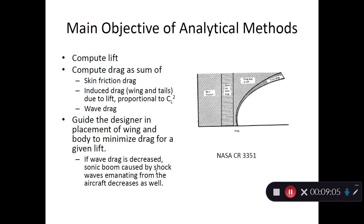When you go to three dimensions in subsonic and transonic flow, because of induced drag, L/D drops to about 20 to 40. Subsonic and transonic aircraft therefore have a very large range, as the Breguet range equation requires a high Mach number times L/D for maximum range. The minute you go to transonic or supersonic flow, wave drag kicks in, and L/D substantially drops — often less than 10, close to 5, 6, or 7. Therefore, supersonic aircraft do not have a very long range.